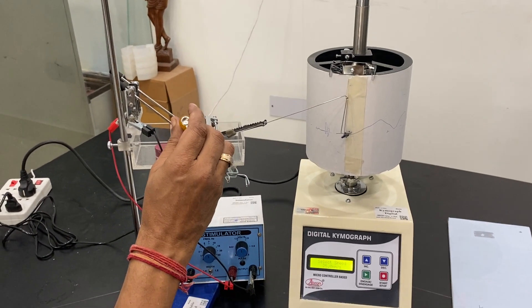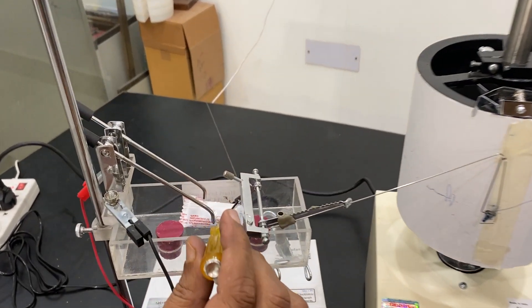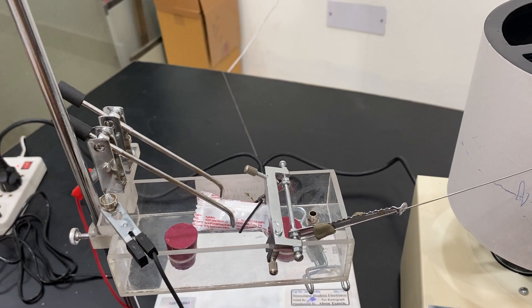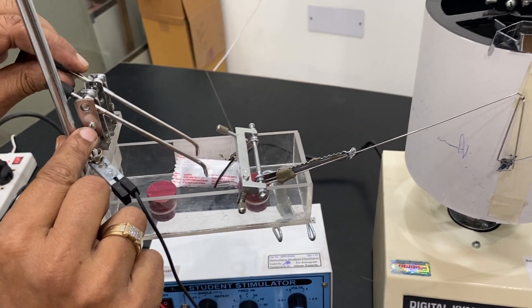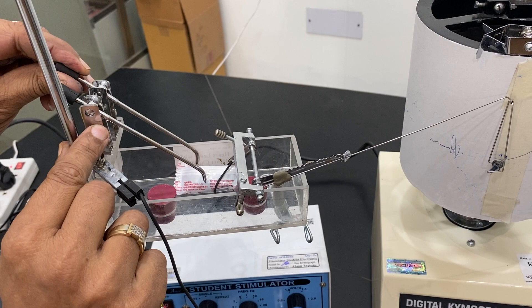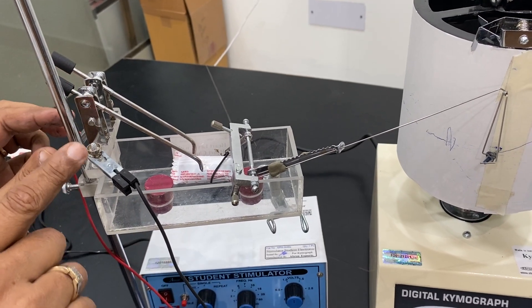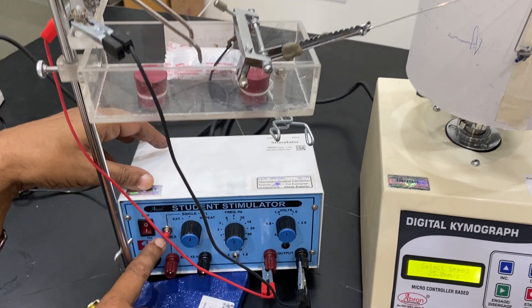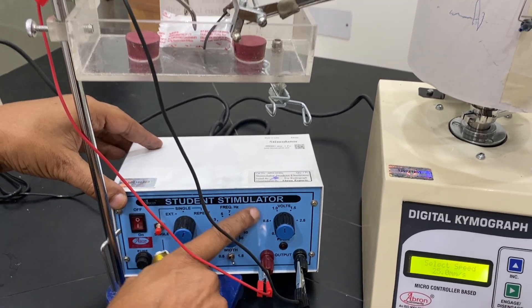I have just put a small plastic box as a heart and these are two electrodes which are adjustable. I can adjust it and put it on two sides of the heart. Anywhere as a shock I can give from the two wires I have connected to the external student stimulator.